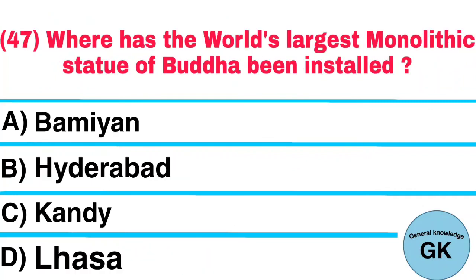Question number 47. Where has the world's largest monolithic statue of Buddha been installed? A. Bamiyan, B. Hyderabad, C. Kandy, D. Lhasa. Answer: Bamiyan.